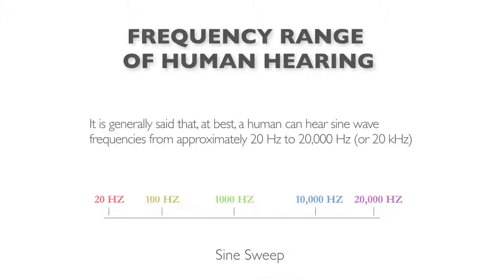If you listen to damagingly loud music or signals, you're going to hear even less of the high frequencies. In fact, you'll generally have a hearing loss represented around 4,000 cycles, because that's where the ear resonates. Let's get back to the sound frequency range.